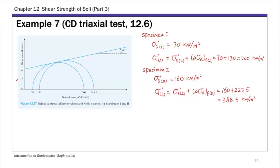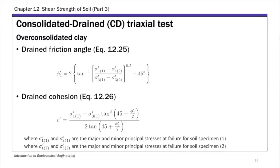So you have these two sets of principal stresses, sigma 1 prime and sigma 3 prime. To calculate the two strength parameters, we're going to use equations 12.25 and 12.26 — equations we covered in previous lectures. These are the two equations for friction angle and drained cohesion. We'll substitute sigma 1 prime and sigma 3 prime for these two soil specimens.